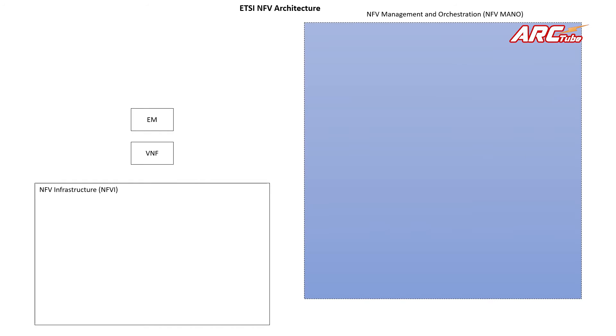The ETSI NFV architecture has three main components. The first one is the NFV Infrastructure, or NFVI in short. The second one is VNF — or there could be multiple VNFs (Virtual Network Functions) — and also Element Manager, or there could be multiple Element Managers. The third piece is the NFV Management and Orchestration, or NFV MANO in short.